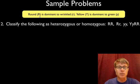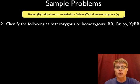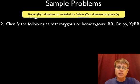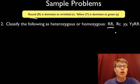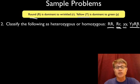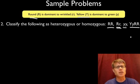For the next problem, round peas are big R and wrinkled peas are little r. Yellow is big Y and green is little y. Generally, whatever is the dominant trait gets the capital letter — round gets big R and yellow gets big Y. Question two: classify the following as heterozygous or homozygous. Heterozygous means you have different alleles; homozygous means you have the same. So big R, big R would be homozygous dominant. Big R, little r would be heterozygous — also called hybrid. Little r, little r would be homozygous recessive. Big Y, little r would be heterozygous; big Y, big Y homozygous dominant.